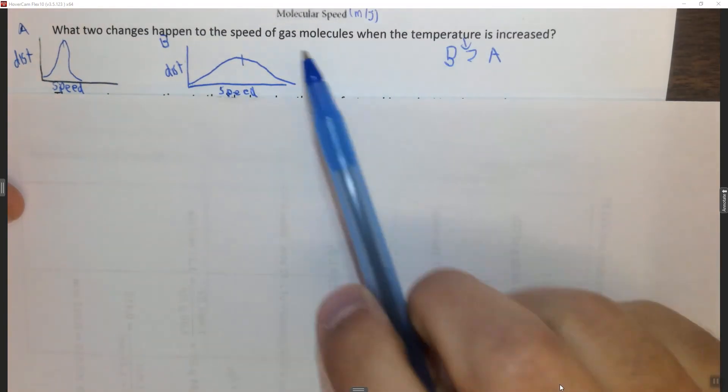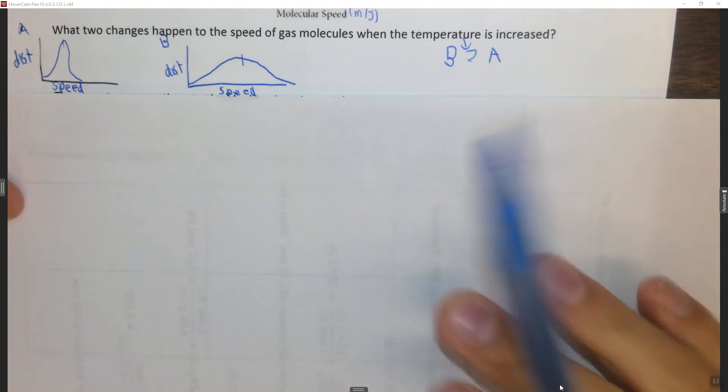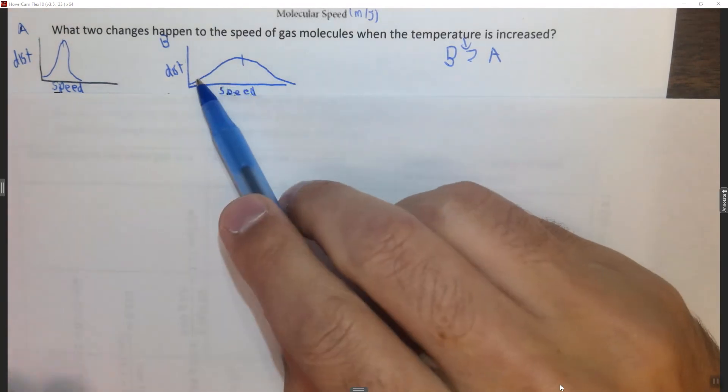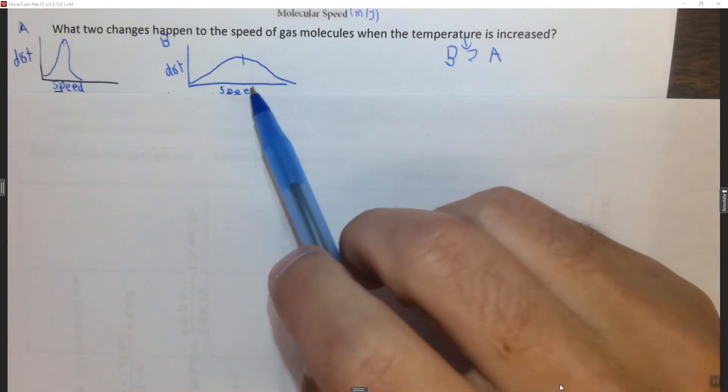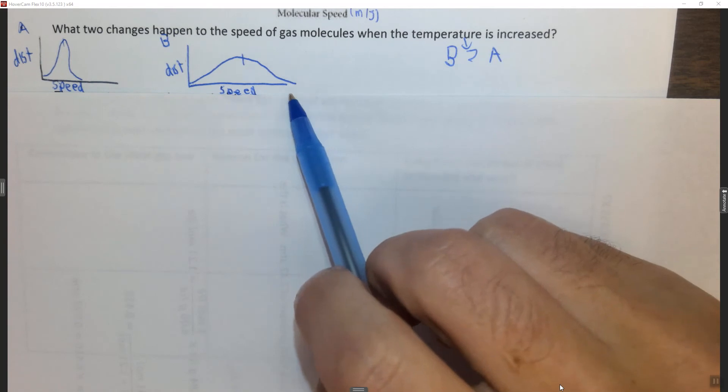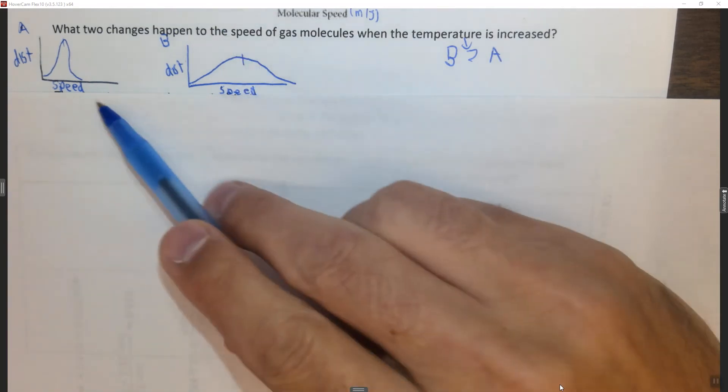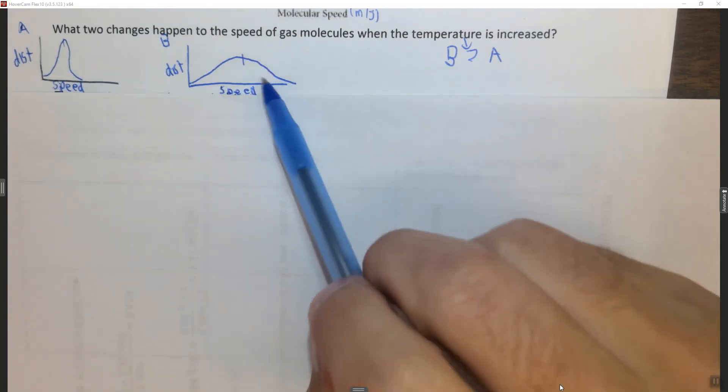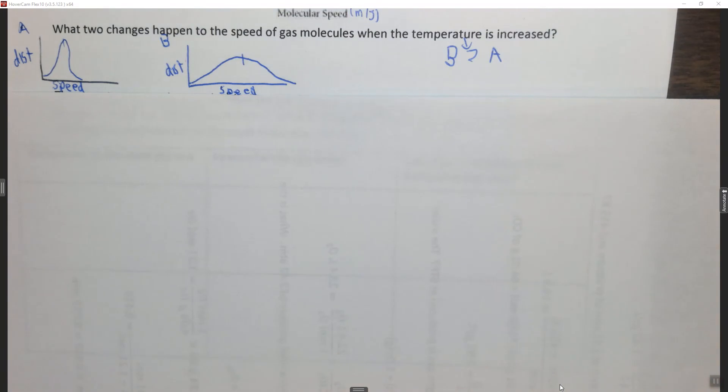But a second thing happens. So it's not just that the average speed increases, it's also the distribution or the range of speeds also increases. The difference between the fastest and the slowest becomes greater. So the range of speeds increases as well as the average speed increases.